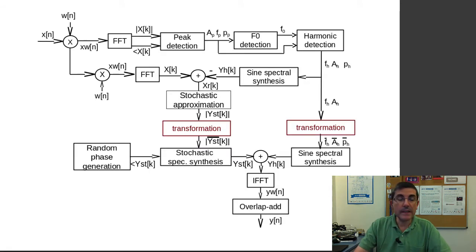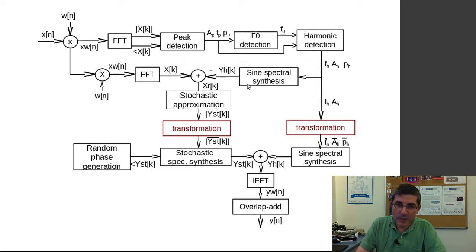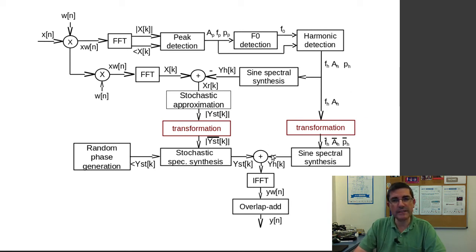We have been describing this type of block diagram in which, after all the analysis we do of understanding the harmonics, extracting their information and then subtracting them from the original signal, we obtain this stochastic approximation. Now we are focusing on these two red blocks in which we can apply transformations to both the stochastic representation and the harmonic representation, and then we can synthesize back.